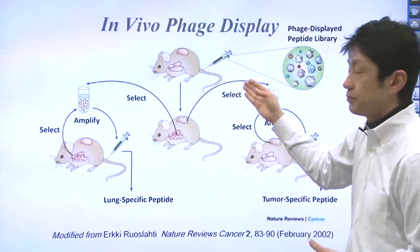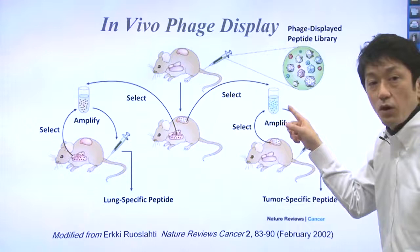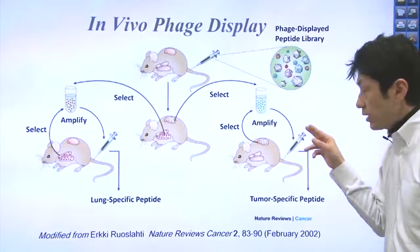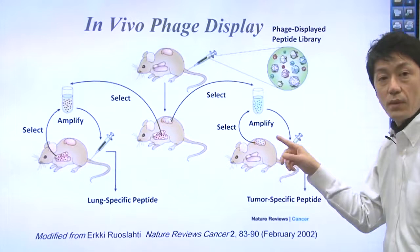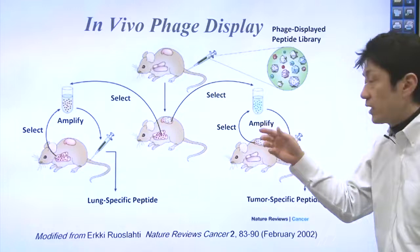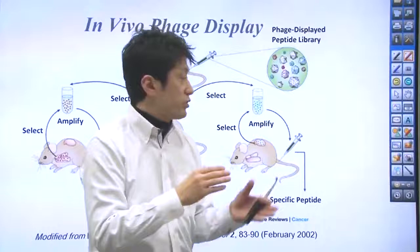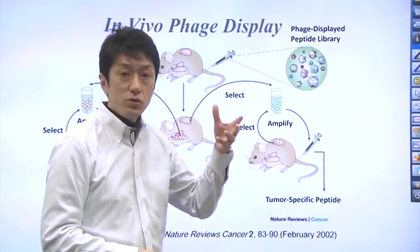The phages are then extracted from the tumor for amplification. The amplified phages are administered again into a second mouse with the same kind of tumor. After the phages are allowed to migrate inside the body, the tumor is extracted again to amplify the phages. This process is repeated until the particular phages have accumulated in the tumor. At the end, analysis of the phage DNA allows you to identify the tumor-specific peptide.